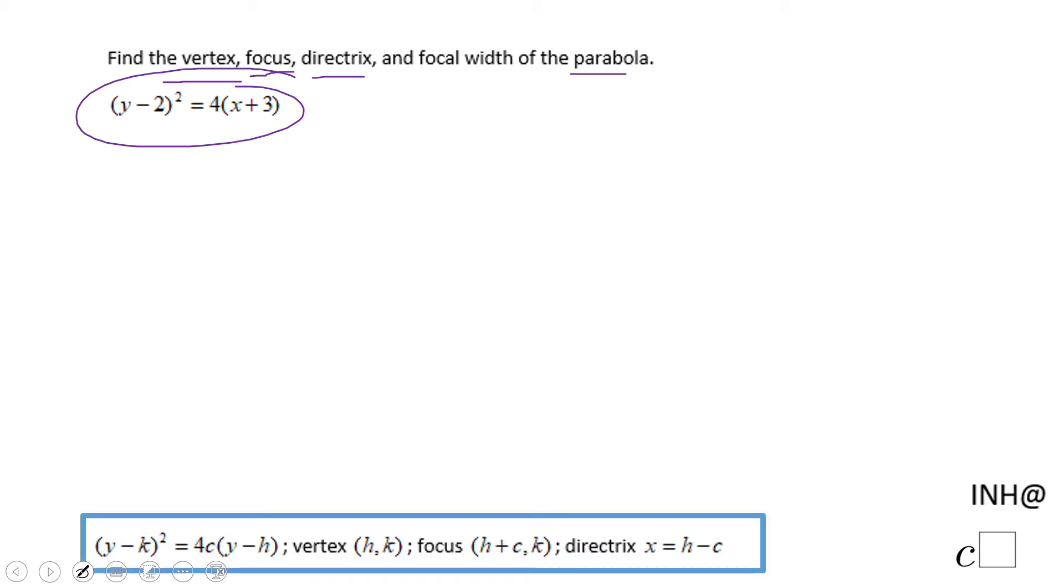For that reason I'm going to use this equation you see here with just one change. Be sure it's 4c times (x - h), so the equation I'm going to use is (y - k)² = 4c(x - h).